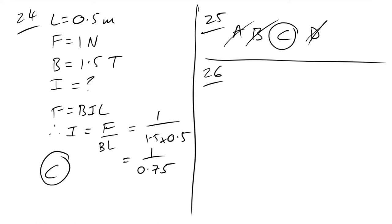Question 26: two coils; when the switch closes, coil Q experiences a force. We only have a force when there's a change in magnetic field, which only happens when the switch is first closed. After that, current is constant and there's no changing field. By Lenz's law, the force acts to oppose the change — Q wants to move away. The answer is D.